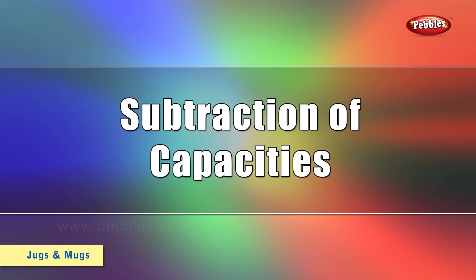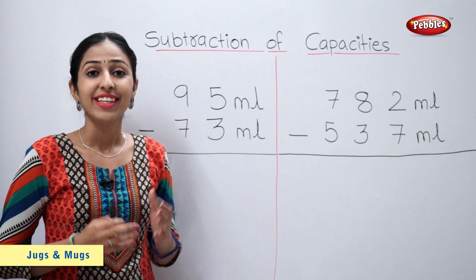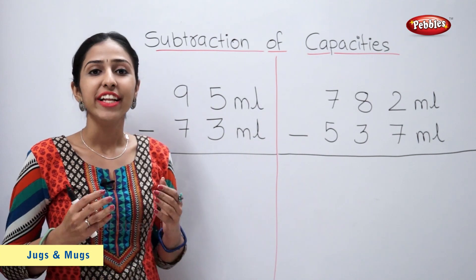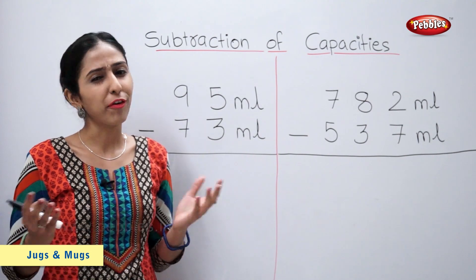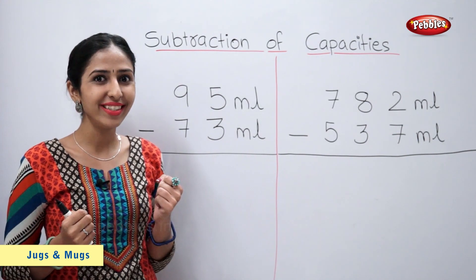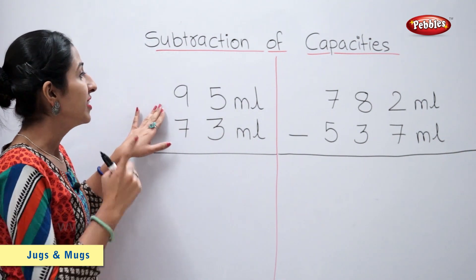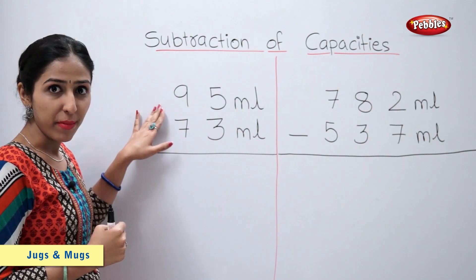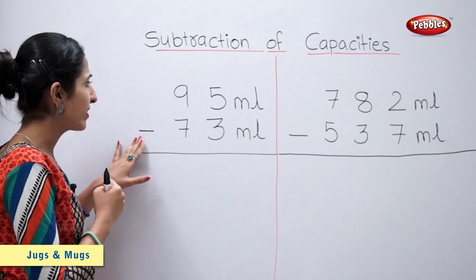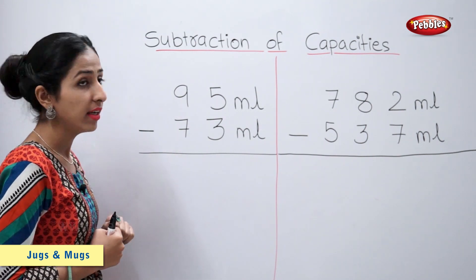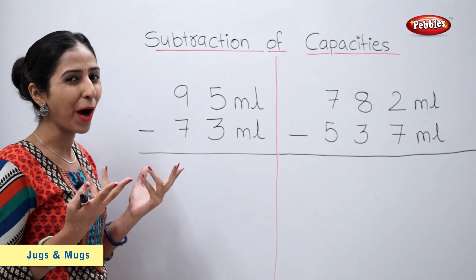Subtraction of capacities. Let's solve a few examples. 95 ml minus 73 ml is equal to how much?